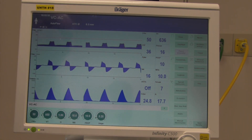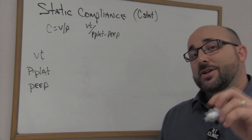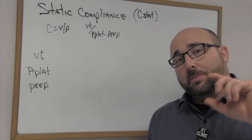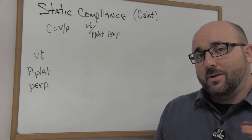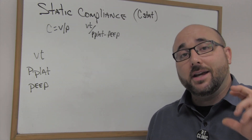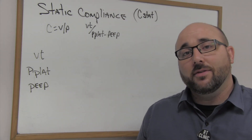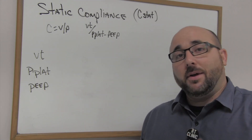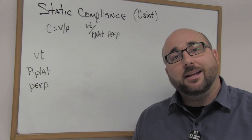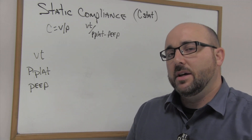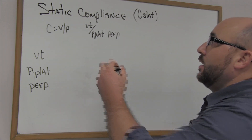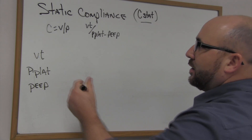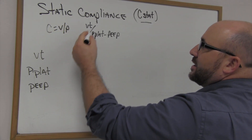Back at the board — I'll show you how we calculate static compliance. Looking at just one number, it's really important to know your plateau pressure so you can trend your ARDS or lung stiffness. Putting it into static compliance gives us a volume-per-pressure statistic. Static compliance, also called C-stat, is calculated just like dynamic compliance: compliance equals volume over pressure. In this case, volume is tidal volume.